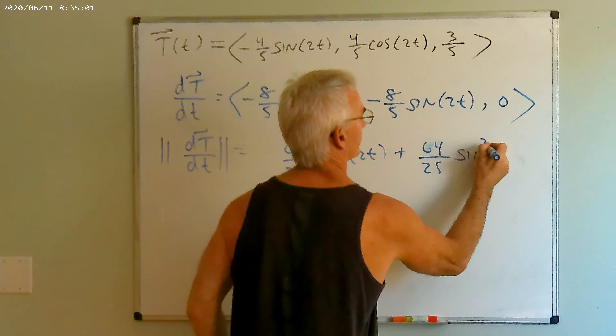Let's start by finding the velocity vector, which is simple enough. The length will also be relatively simple: we take the square of each component and add them under the root. Because of the Pythagorean identity, one quantity simplifies to just 64, giving us the square root of 100, or 10. So 10 is the length of our velocity vector. We multiply the velocity vector by one-tenth to create the unit tangent vector T(t), reducing fractions: negative four-fifths sin(2t), four-fifths cos(2t), three-fifths.